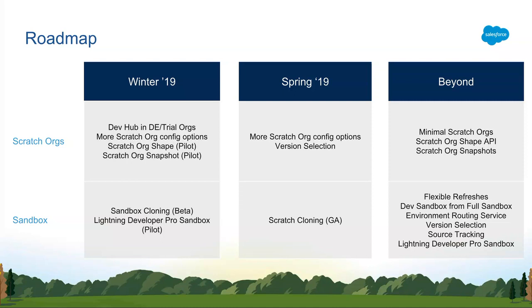So Winter 19 has been an exciting release for environments. The big announcement was that we made Scratch Orgs more available than in the past by allowing the developer hub to be enabled in DE Orgs. This means you can now start understanding how Scratch Orgs are meant to be used, learn about new packaging technologies, and start doing Trailhead modules within Scratch Orgs. For production use cases, we still ask you to use your production dev hubs, which have larger Scratch Org limits — that's where you run your CI and CD. There are also more Scratch Org configuration capabilities, meaning you can craft Scratch Orgs in more ways than in past releases.